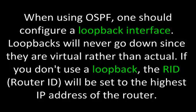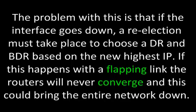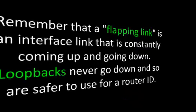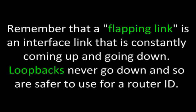When using OSPF, one should configure a loopback interface. Loopbacks will never go down since they are virtual rather than actual. If you don't use a loopback, the RID, that is the router ID, will be set to the highest IP address of the router. The problem with this is that if the interface goes down, a re-election must take place to choose a DR and BDR based on the new highest IP. If this happens with a flapping link, the routers will never converge and this could bring the entire network down. A flapping link is an interface link that is constantly coming up and going down. Loopbacks never go down, and so are safer to use for a router ID.